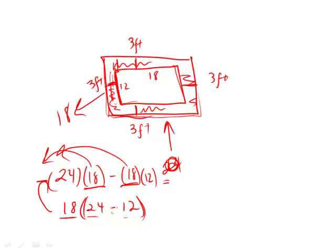But why am I doing this? How am I simplifying it like this? Well, notice, what is 24 minus 12? It's easy. It's 12. So now we have 18 times 12.